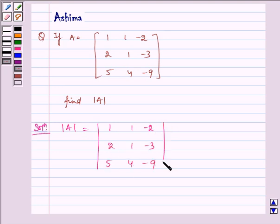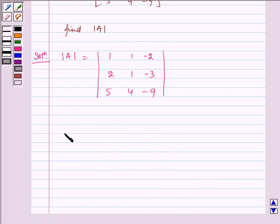Now solving this, we get 1 times (1 times -9 minus 4 times -3) minus...